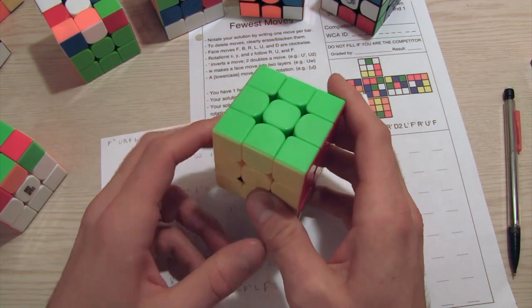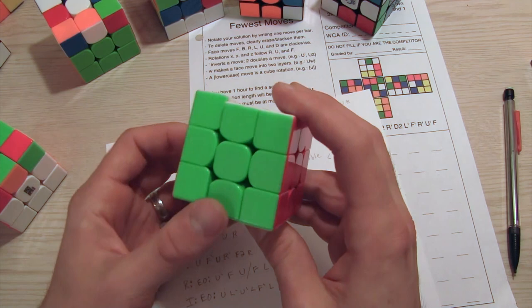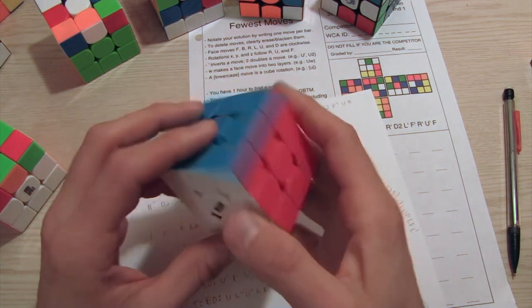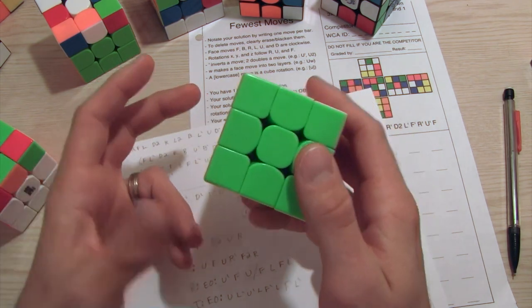You want two edges, or corners, in the bottom layer, and one not in the bottom layer. And of course the bottom layer can be anywhere depending on how you're holding it.